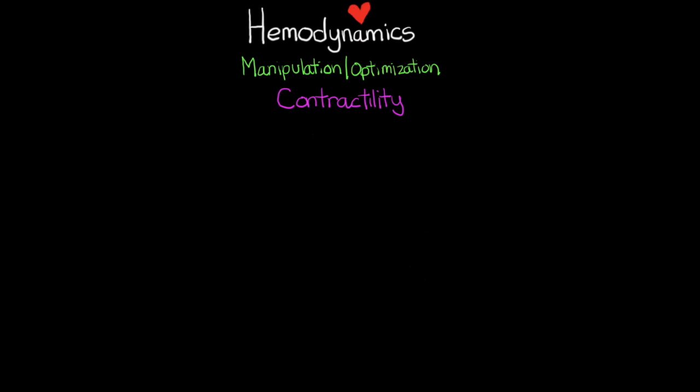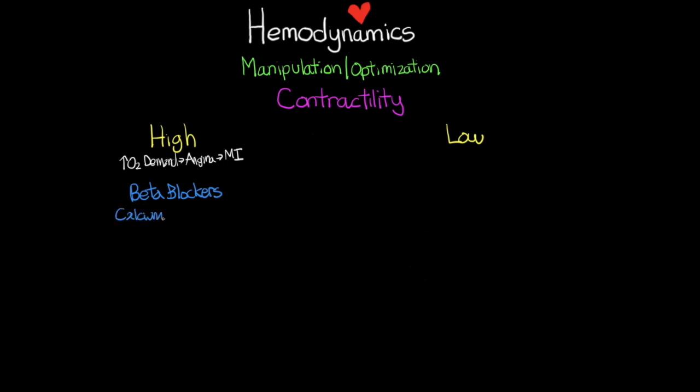Moving on to our next parameter: contractility. With contractility there are really two states we will find ourselves trying to optimize — when contractility is too high and when it is too low. If contractility becomes too high, it causes an increased workload on the heart, increasing myocardial oxygen demand, which can sometimes lead to angina and an MI. So it's important that we reduce oxygen demand by reducing contractility, and the ways we do this are with beta blockers and calcium channel blockers.